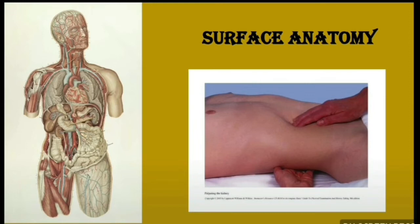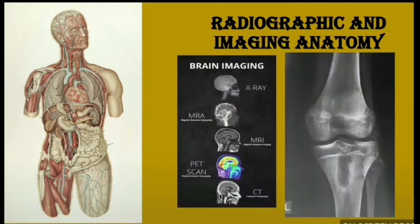The sixth subdivision is radiographic and imaging anatomy — the study of bones and deeper organs by plain and contrast radiography. Examples include ultrasound and CT scans. You can see brain imaging examples: X-ray, MRI, PET scan, and CT scan. These are the different types of radiographic and imaging anatomy.